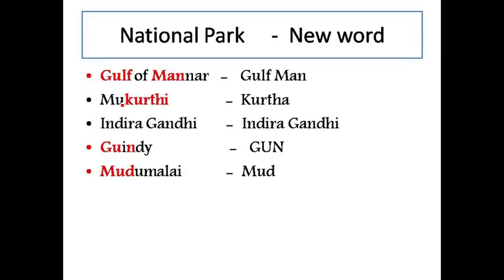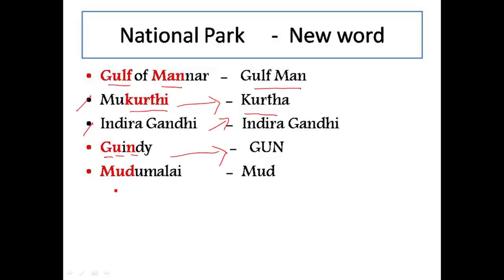Let us see the trick. For Gulf of Manar National Park, just remember it as 'Gulf Man.' For Mukurti National Park, just remember it as 'Kurtha' — it is a type of dress. Indira Gandhi is well known, so you can easily remember her. For Gundi National Park, just remember it as 'Gun.' For Mudumalai National Park, just remember it as 'Mud.' So we have got five new words: Gulf Man, Kurtha, Indira Gandhi, Gun, and Mud.